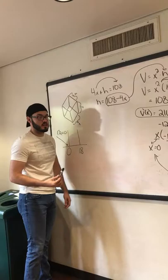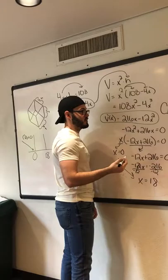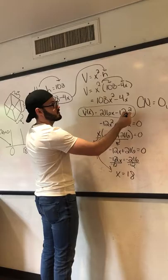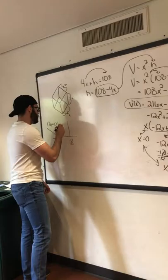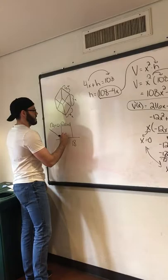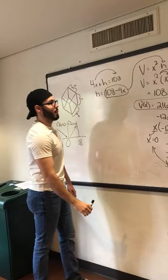Now if you plug in a number in between 0 and 18, it could be 1. It would be 216 times 1 is 216, minus 12 times 1 squared. So 12 times 1 squared is just 12, so it would be 216 minus 12, still positive. So we know that f prime of X is greater than 0, so the function is increasing here.